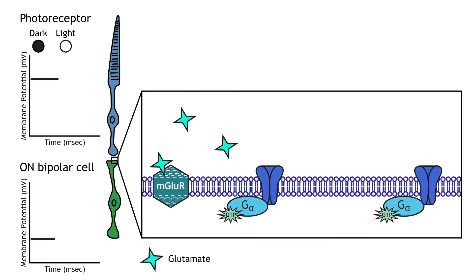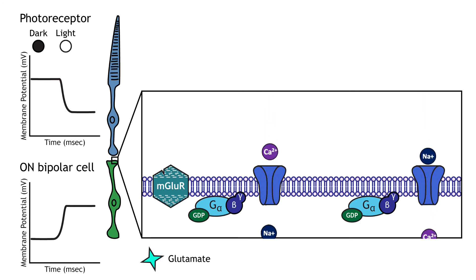In on-bipolar cells, the glutamate released by the photoreceptor is inhibitory. On-bipolar cells express metabotropic glutamate receptors. In the dark, glutamate released by the photoreceptor activates the metabotropic receptors, and the G proteins close cation channels in the membrane, stopping the influx of sodium and calcium and hyperpolarizing the membrane potential. In the light, the absence of glutamate results in the ion channels being open and allowing cation influx, depolarizing the membrane potential.